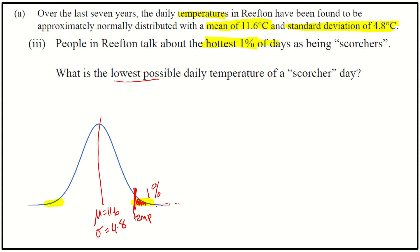So we need to think — we've been given a probability. That means instead of trying to find a probability using our NCD mode, we need to use our inverse normal mode. So for the inverse normal mode on our calculator, we need to put in this area of 1%. I just need to convert that into a decimal — so 1 over 100 gives us a value of 0.01.